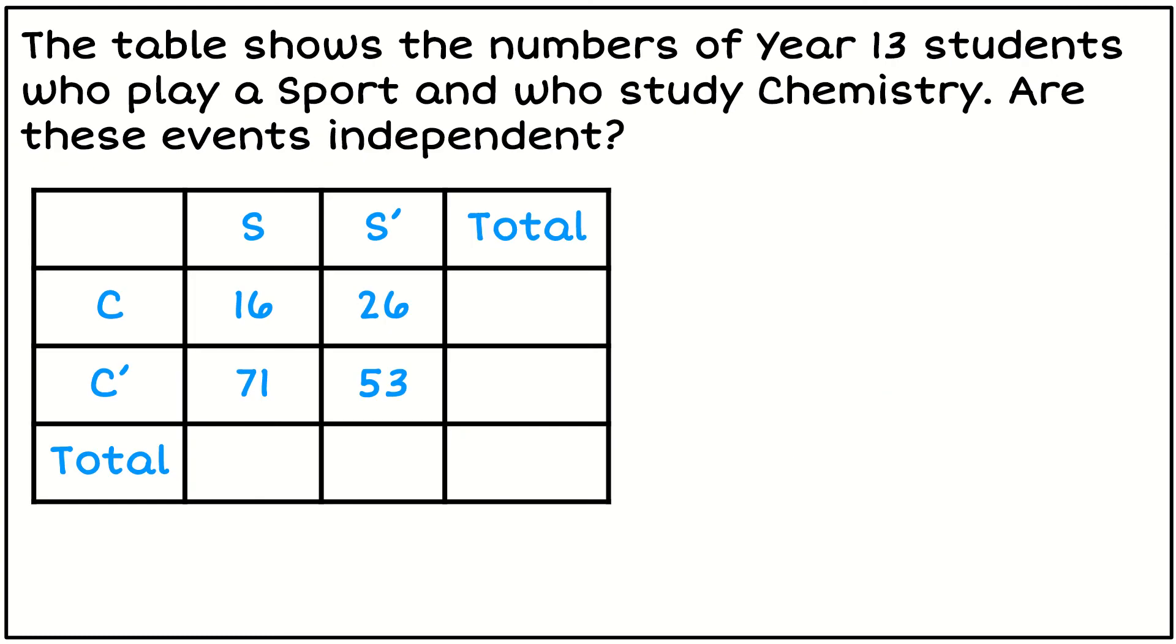Let's have a look at a different example. So this is looking at students who take sport versus studying chemistry, and we want to know are these events independent. So the first thing I need to do is add my totals in. So columns have to add up, rows have to add up. Then there are three different ways that I can check this.